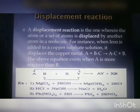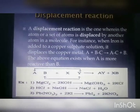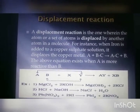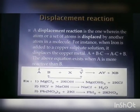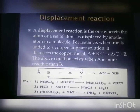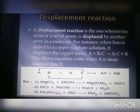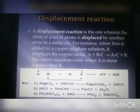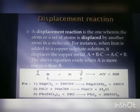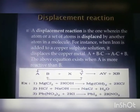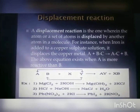Several examples of displacement reactions: Fe + CuSO₄ gives FeSO₄ + Cu. Zn + CuSO₄ gives ZnSO₄ + Cu. Zinc is more reactive than copper, which is why zinc replaces copper and forms zinc sulfate.